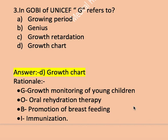The rationale of GOBI: G refers to growth monitoring of young children, O means oral rehydration therapy — treatment of mild and moderate dehydration, B means promotion of breastfeeding, and I refers to immunization against measles, diphtheria, polio, tetanus, and tuberculosis.